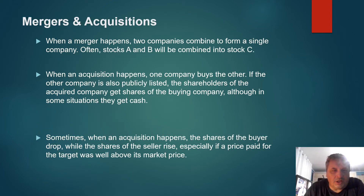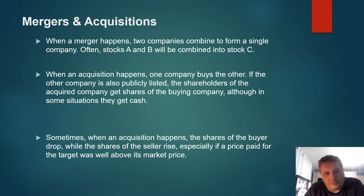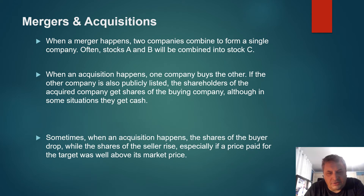Mergers and acquisitions: when a merger happens, two companies combine to form a single company — often stocks A and B are combined into stock C. When an acquisition happens, one company buys the other. If the acquired company is publicly listed, shareholders of the acquired company get shares of the buying company, although in some situations they get cash. Sometimes when an acquisition happens, the shares of the buyer drop while shares of the seller rise, especially if the price paid for the target was well above its market price.